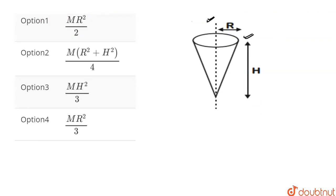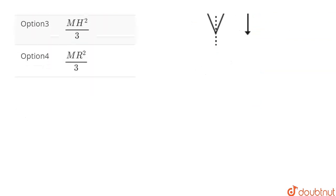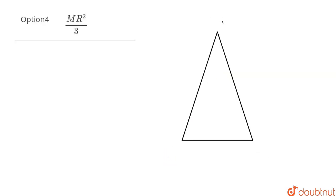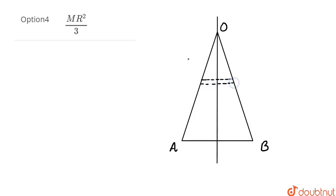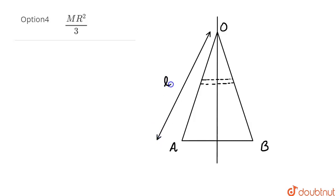Let's suppose here is our cone, this is our axis, and the apex is O. Now, let's take a differential element here, and the slant height of this cone is L. The radius of this cone is capital R and the height of this cone is capital H.